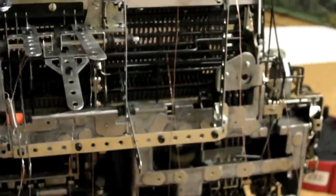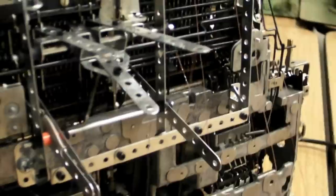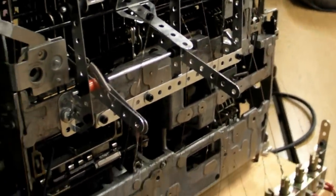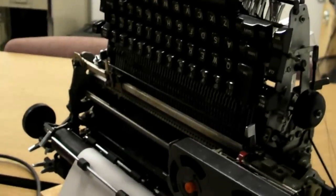And those actuate the erector set levers via copper wire. Here you can see the actual typewriter, makes a little more sense.